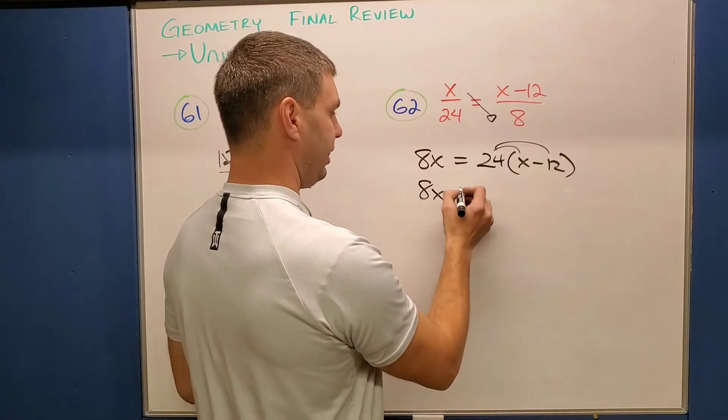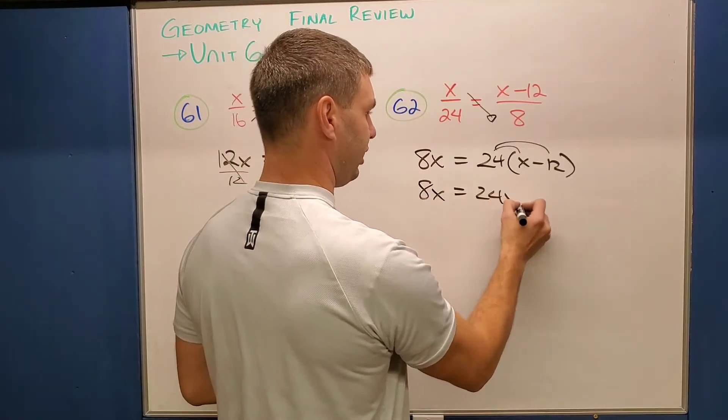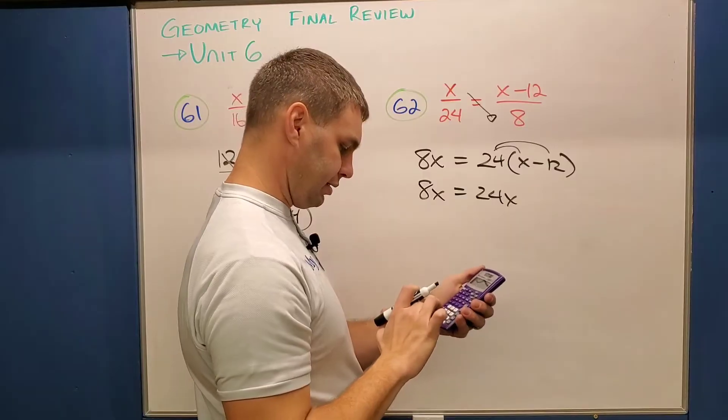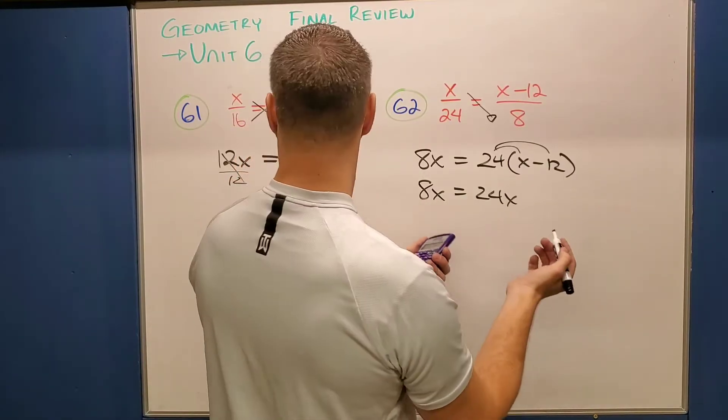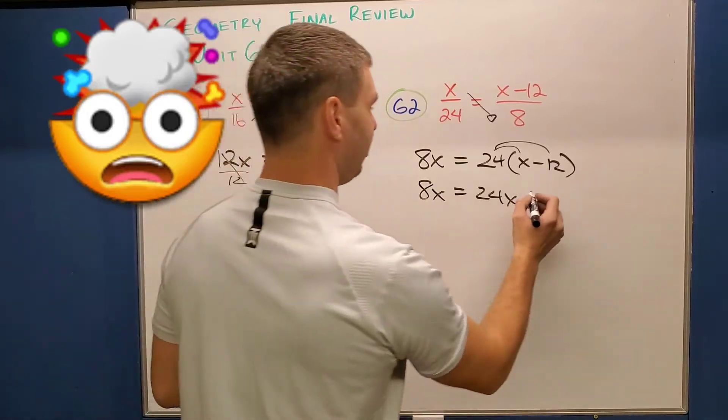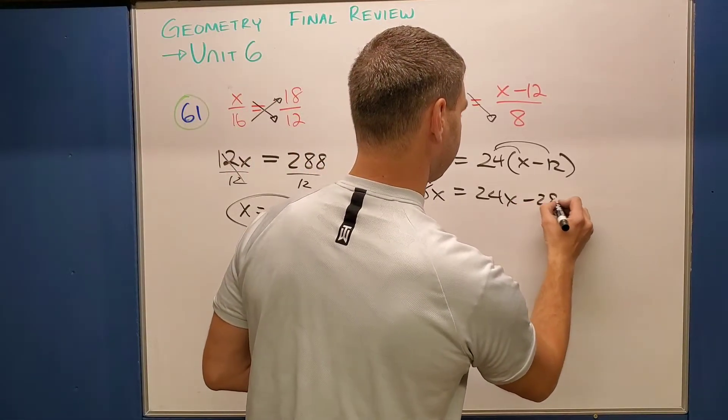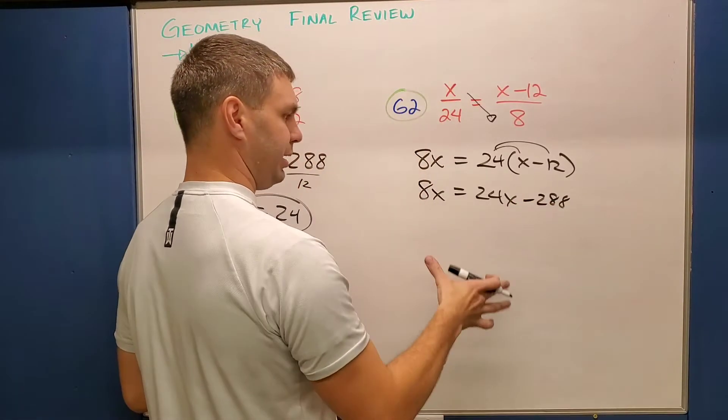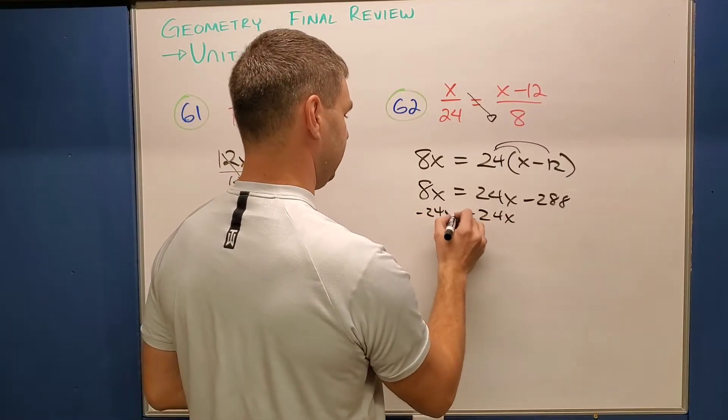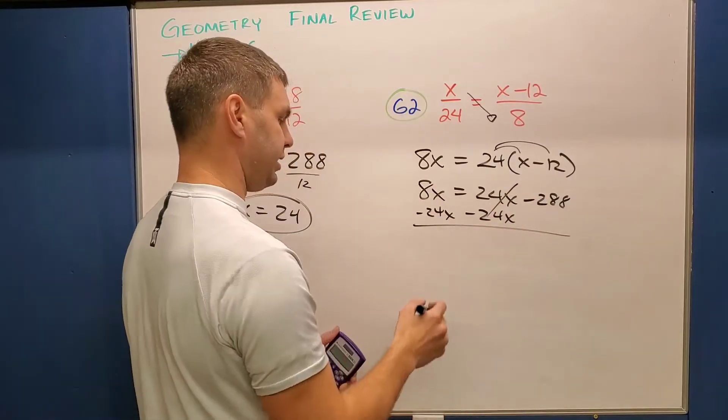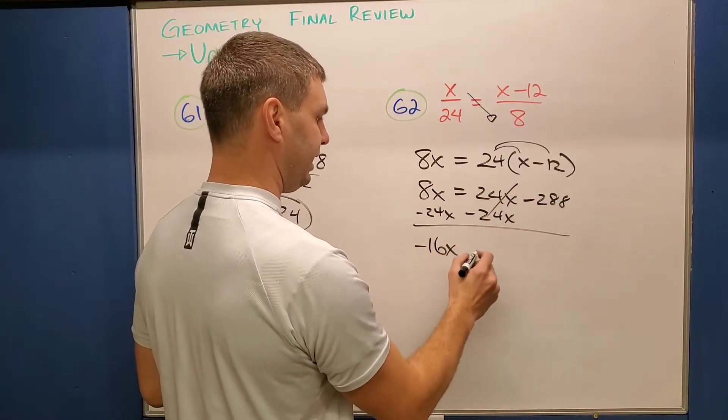So if I simplify this a little bit, I have now 8x equals 24x, and then minus, let's see, 24 times 12 is 288. That's the same as this one, 288. Let me get both my x's together. So I'm going to subtract 24x on both sides like that. And 8x minus 24x is negative 16x, still equals negative 288.